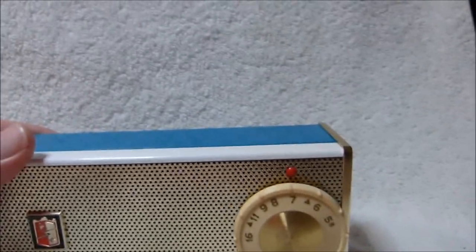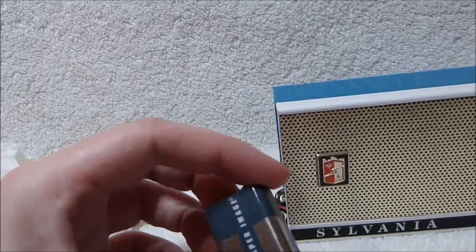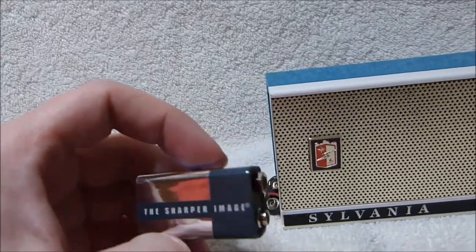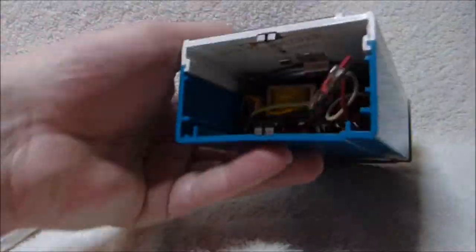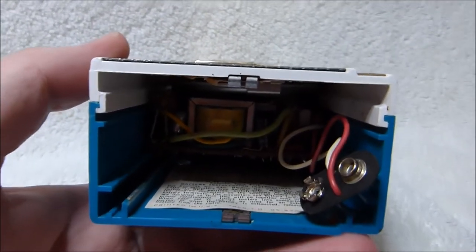And it draws a constant 15 milliamps from the battery, so that'll make the battery not last all that long, especially the older carbon-zinc batteries. There's almost room in there for a 6AA cell holder, but not quite unfortunately.